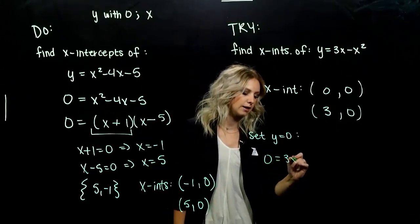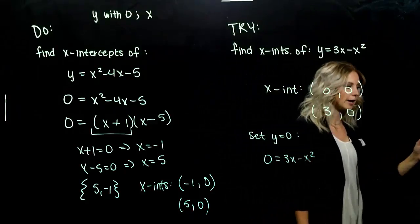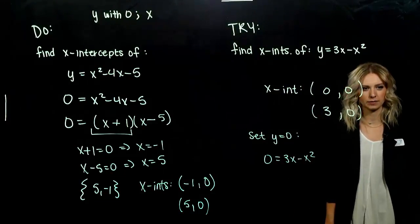So if I get 0, it's 3x minus x squared. I've got a binomial. So my first question, is it a difference of squares? No.